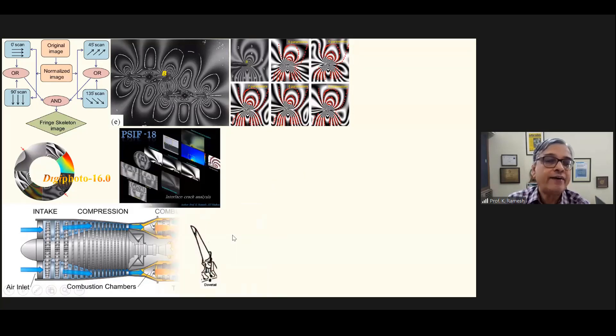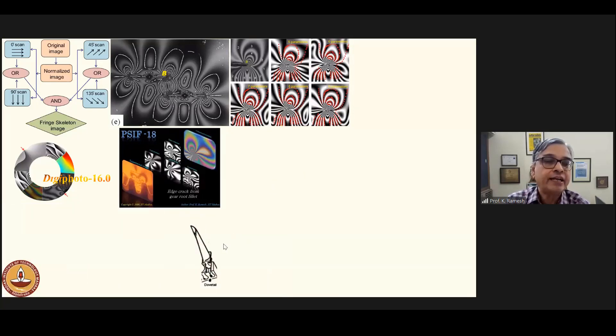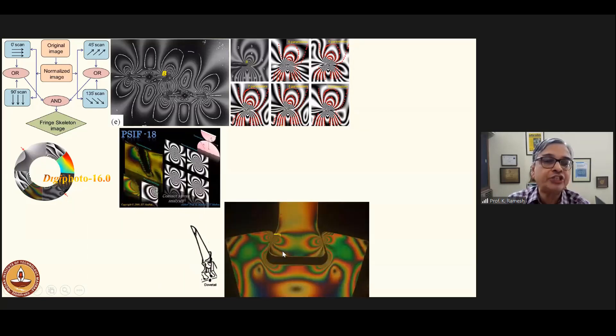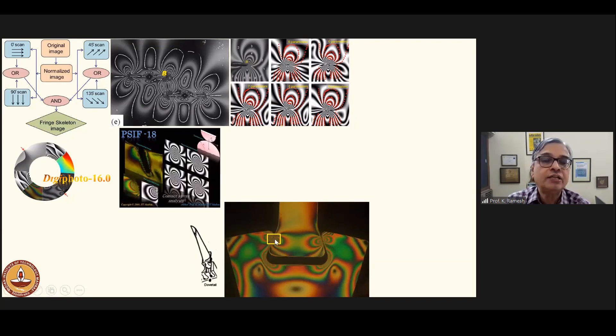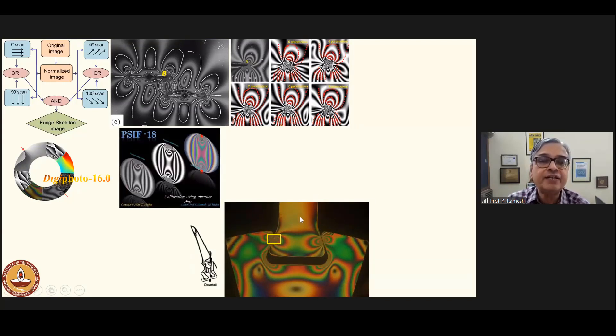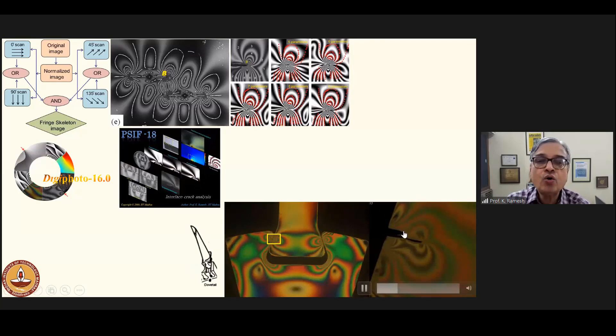One of the applications of photoelasticity is in the development of jet engines, you have a dovetail joint. When you look at a photoelastic picture, the joint stresses appear like this. In the contact zone, cracks can develop in service. They grow due to fatigue.